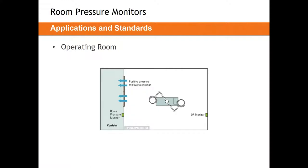If you have multiple doorways, some operating rooms do have two entrances. If both spaces outside the OR are neutral, it may be advisable to only measure pressure in one location — if you're trying to measure the same physical quantity twice, you will get slightly different measurements. However, if one corridor is neutral and the other is slightly more positive or negative, it is perfectly acceptable to monitor pressure in both locations.